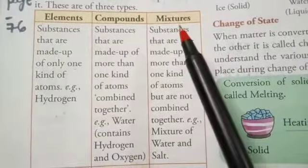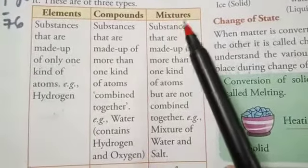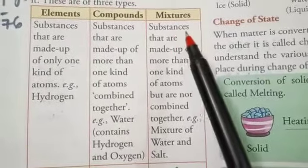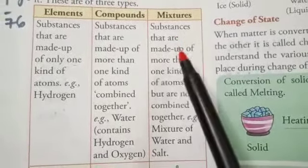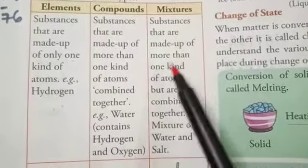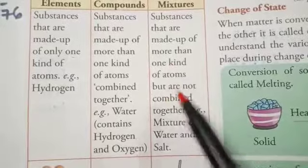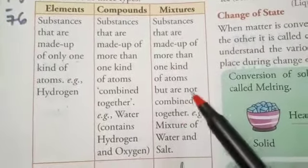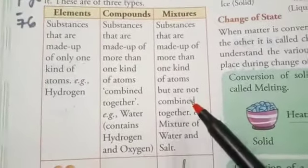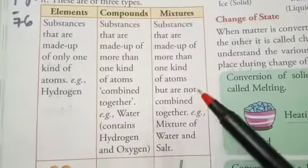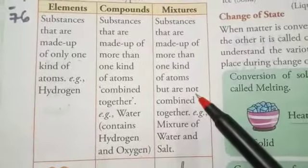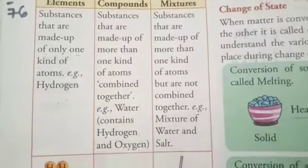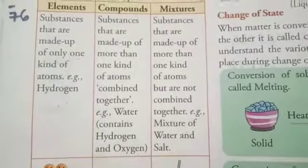So now we will read about mixtures. Mixtures are substances that are made up of more than one kind of atoms but are not combined. These substances have more than one type, but they are not combined with each other.